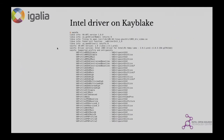This is the VA info output for a Kaby Lake laptop, which is mine. You can see it depends on the hardware and the driver how many profiles and entry points are supported. In this case there are MPEG-2, H.264 with different profiles, VC1, JPEG, VP8, H.265, and VP9. There are also many entry points — for example VLD for decoding, N-Slice for encoding, and VideoPostProc for video processing like scaling and changing color formats.